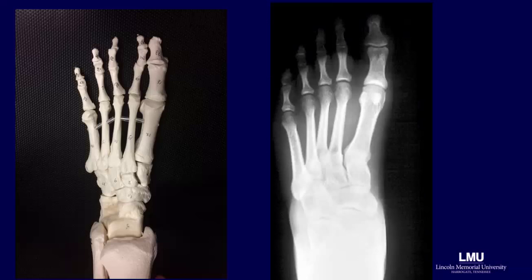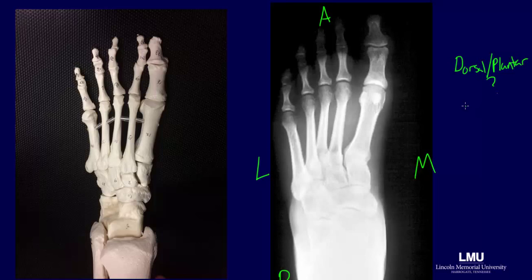Let's work through the systematic approach with this radiograph. Typically, a marker will indicate laterality of the image — that is to say, if you are looking at a right or a left foot. While we can identify anterior from posterior and medial from lateral, a radiograph simultaneously shows dorsal and plantar structures. Since there is no identifying marker, let's assume this is a radiograph of the left foot and compare it to a reference image. This view of the foot that looks at either the dorsal or plantar surface is called an AP view, or anteroposterior view.